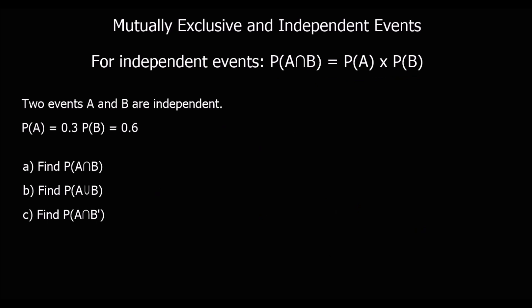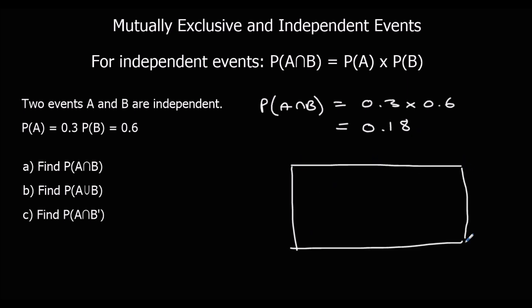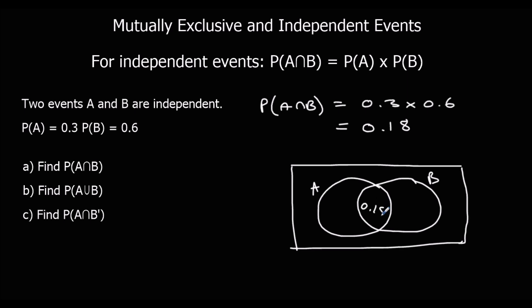Here's another question — you could pause the video and try this one. Again we've got independent events, so the probability of A and B is just the two probabilities multiplied together: 0.3 times 0.6, that's 0.18. We can draw a Venn diagram with 0.18 in the middle. The probability of A is 0.3, so we need another 0.12. The probability of B is 0.6, so we need another 0.42. B is 0.6 plus 0.12 gives 0.72.